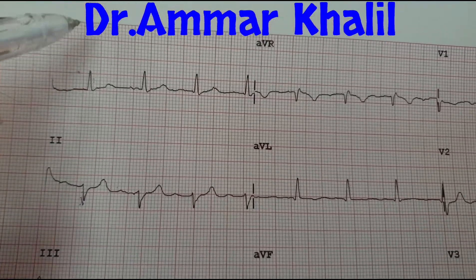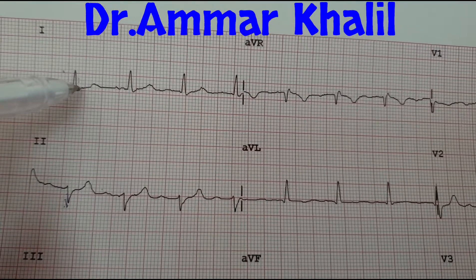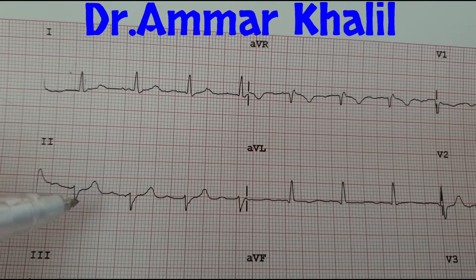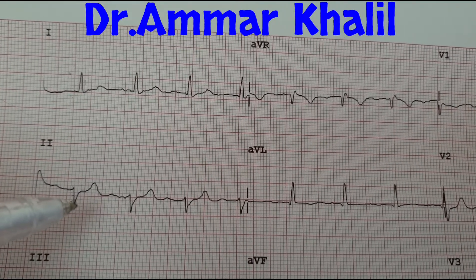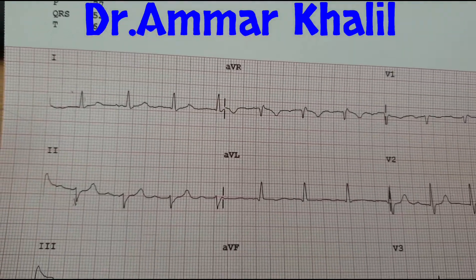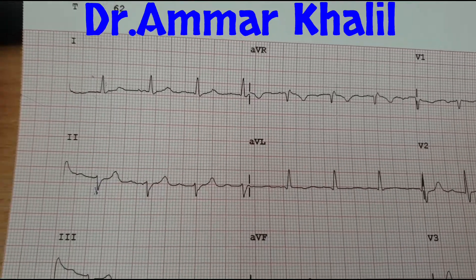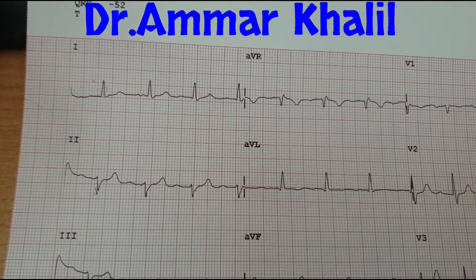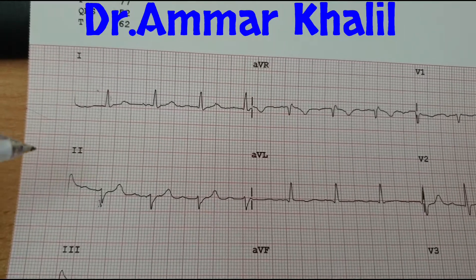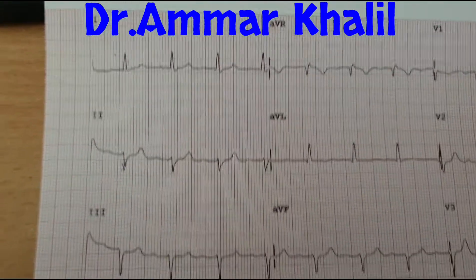If lead one is negative and lead two is positive, that means it will be right axis deviation. This is how to differentiate between axis deviations and how to determine them in a very easy way.